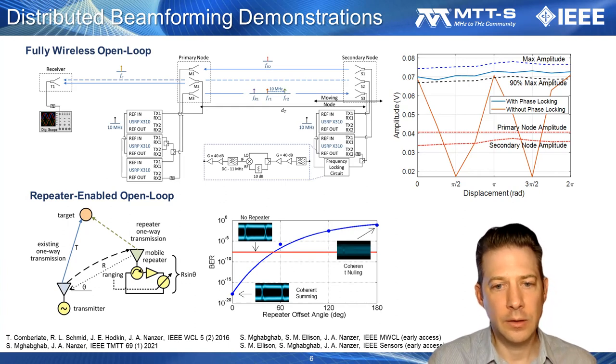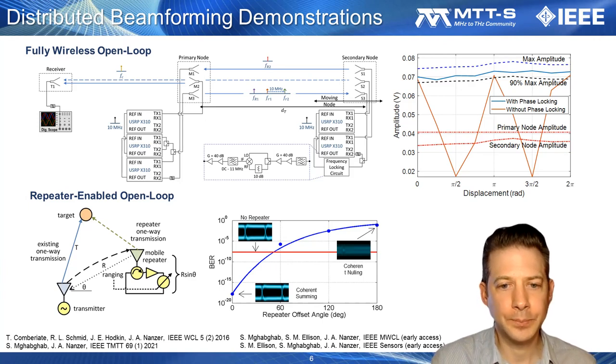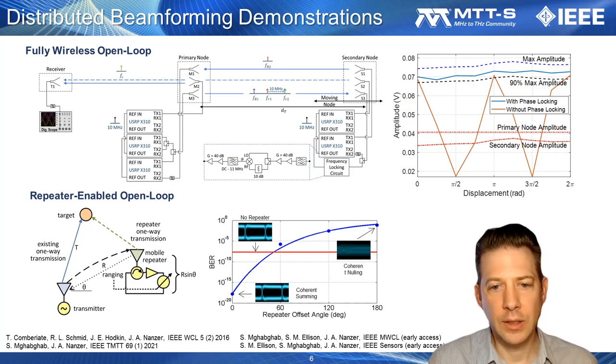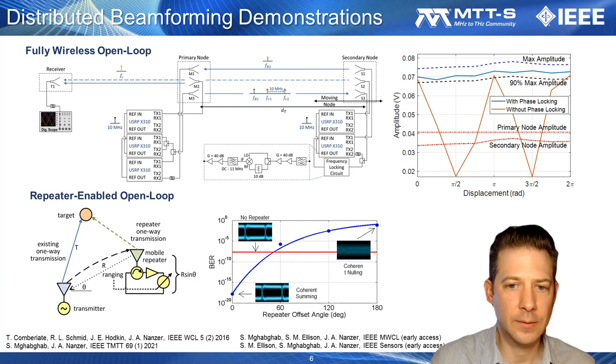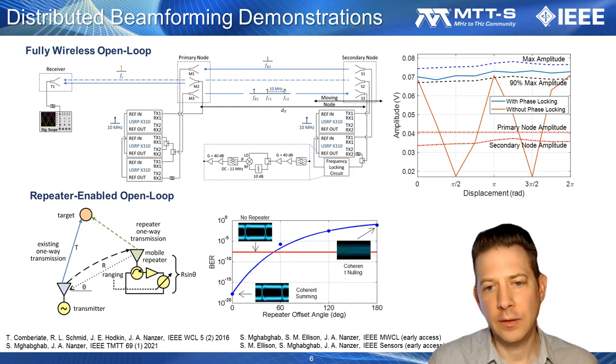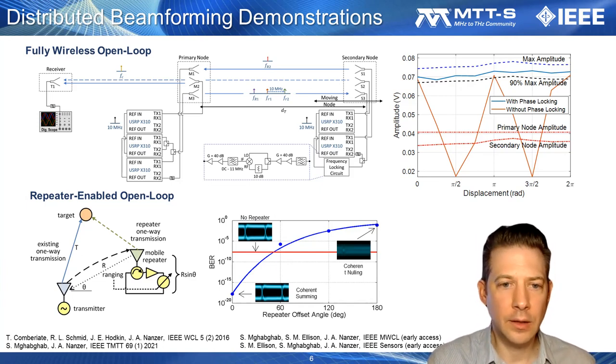As I noted earlier, specific topologies can support distributed beamforming with less information, and an example here is a repeater-enabled system where only the range and angle of the nodes is required to support distributed beamforming. What we show here is the ability to boost or null communications transmission with no connections at all between the repeater and the transmitting system. I'll discuss these systems in detail and others in my lecture.